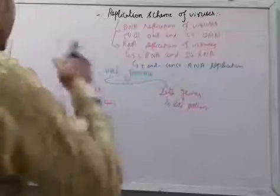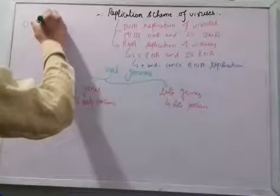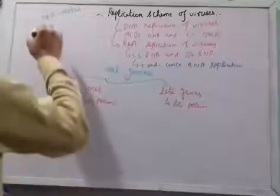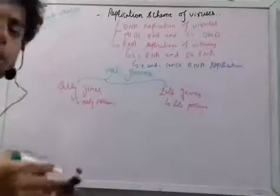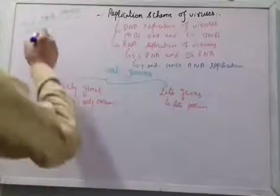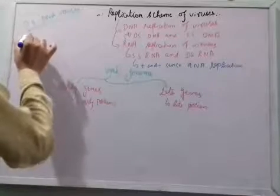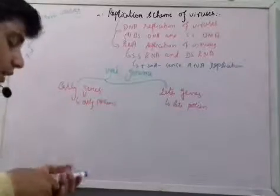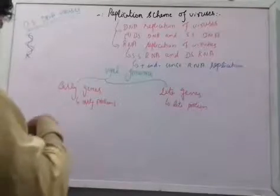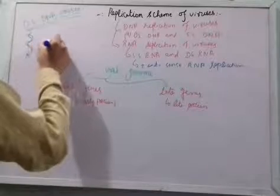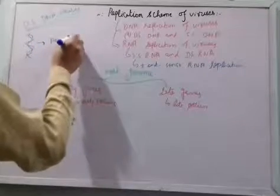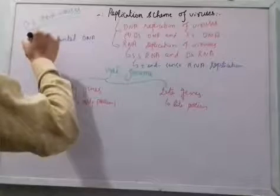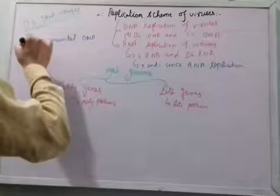If we talk about double-stranded DNA viruses, you know about the double-stranded structure. A double-stranded DNA — which we usually call parental DNA — contains both early genes and late genes. Let's suppose the black regions represent the early genes.